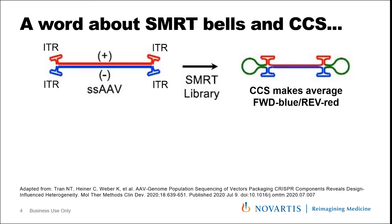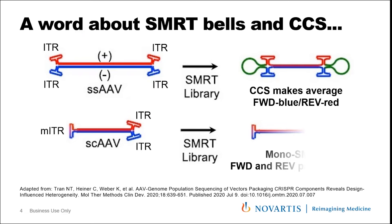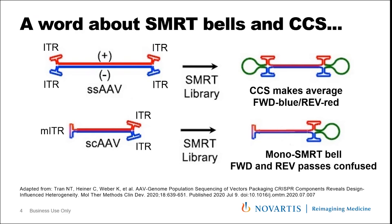A word about SMRTbells and CCS: standard PacBio library prep involves heat denaturation of the AAV followed by annealing of the two strands together. Remember the two molecules — colored in red and blue — will come from different AAVs, which potentially may also have slightly different sequences. When you then ligate your SMRTbells, a classical molecule has a SMRTbell at the beginning and at the end. With self-complementary AAV, you would have only a single SMRTbell, and this is important because if you're not careful, it will confuse the CCS process.